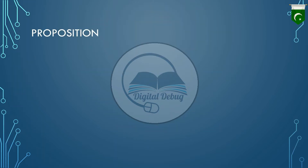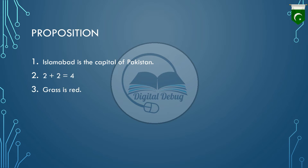In the last lecture, we already discussed what a proposition is. Here are some examples: Islamabad is the capital of Pakistan; 2 plus 2 is equal to 4; Grass is red. These are all declarative statements, so we call them atomic propositions. We call them atomic propositions because every statement contains just one piece of information — one single sentence.